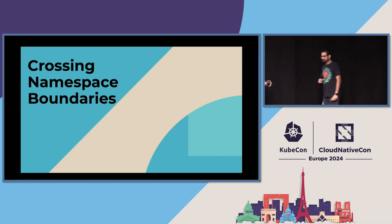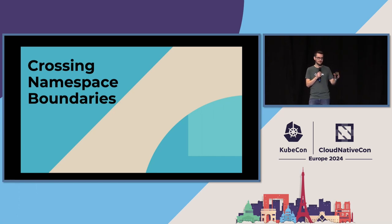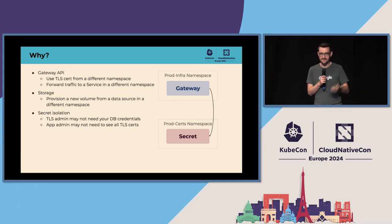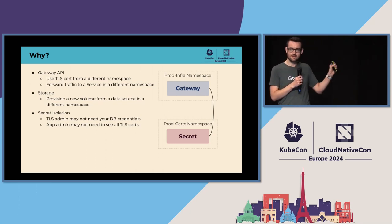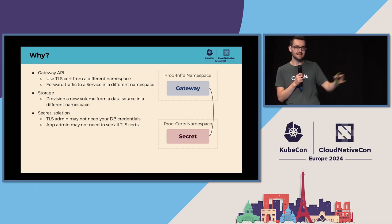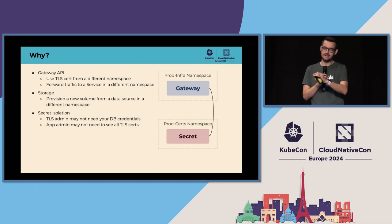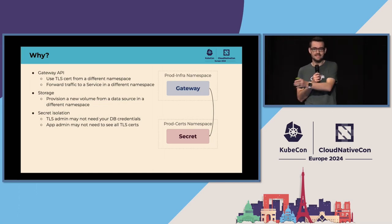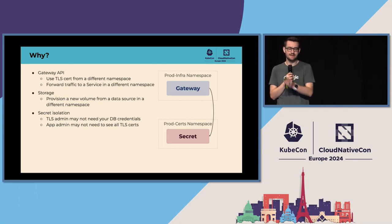Mo helped paint part of the picture here of how we ended up thinking about referential authorization. There was also another discussion going on in parallel about the limitations and safety of Ingress controllers, while at the same time we were getting feature requests to cross namespace boundaries — the ability to reference something in another namespace. For example, in Gateway API, there was a request to reference a TLS certificate in a different namespace, where TLS admins manage certs in one namespace but infrastructure admins have their configuration elsewhere.